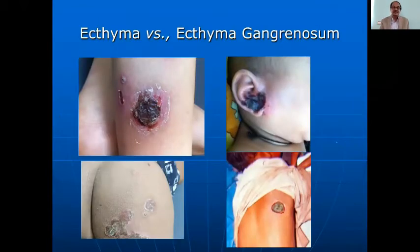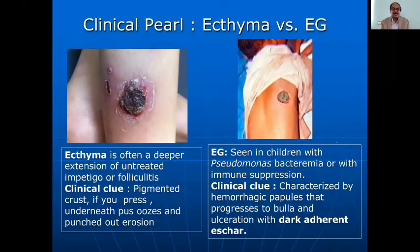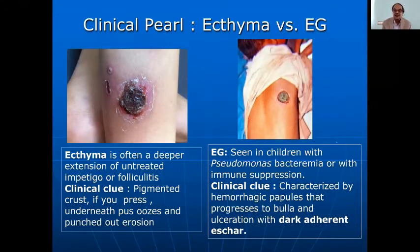Ecthyma must be differentiated from ecthyma gangrenosum, because ecthyma gangrenosum is a Pseudomonas infection with systemic involvement implications. Ecthyma caused by staph or streptococci shows a pigmented crust, and if you remove it you get a punched-out erosion. Ecthyma gangrenosum, due to Pseudomonas bacteremia, begins with hemorrhagic papules that progress to bullae and ulceration with a dark adherent eschar — necrotic tissue.